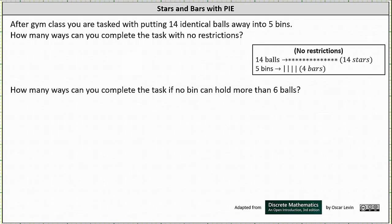Welcome to an example on how to use the stars and bars method of counting with the principle of inclusion and exclusion. After gym class, you are tasked with putting 14 identical balls away into five bins. How many ways can you complete the task with no restrictions, and how many ways can you complete the task if no bin can hold more than six balls?